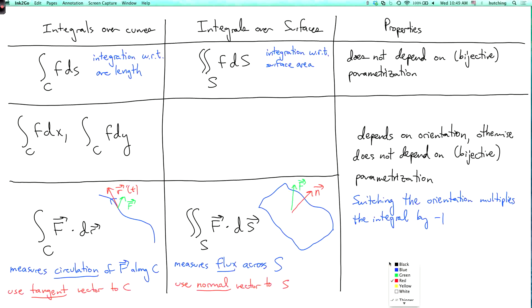For example, if the vector field for the surface is everywhere tangent to the surface, then the flux will be zero. While for the curve, if the vector field is everywhere perpendicular to the curve, then the circulation will be zero. So there's kind of the opposite thing. In any case, they also depend on orientation in the same way — if you switch the orientation, you multiply by minus one.